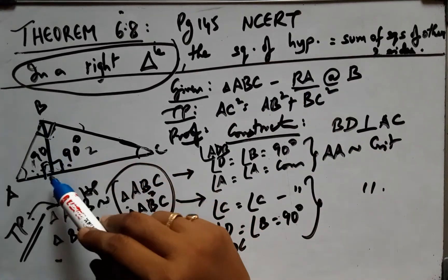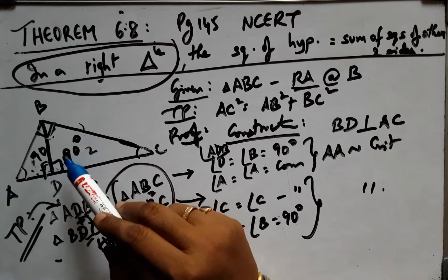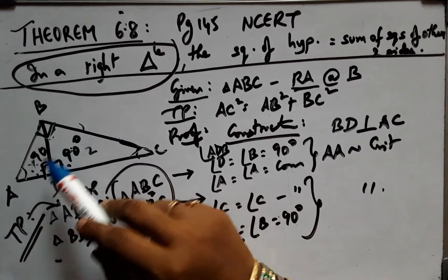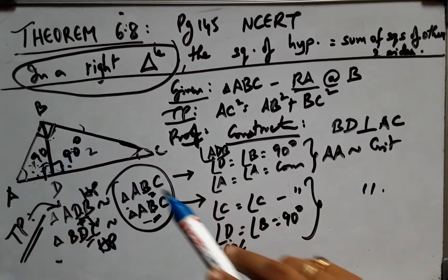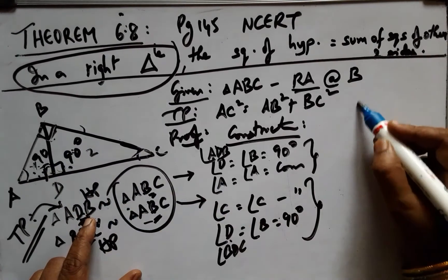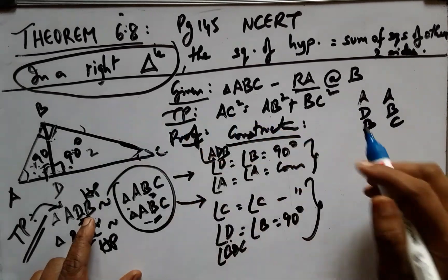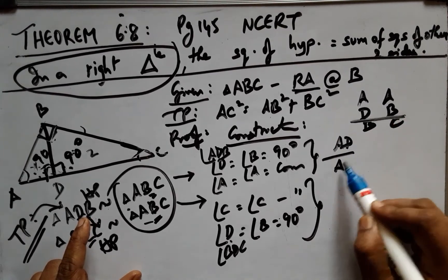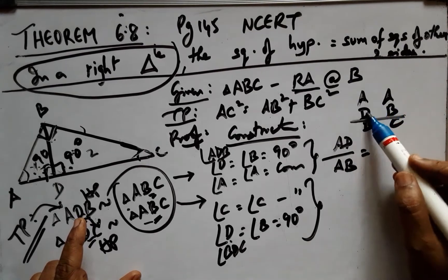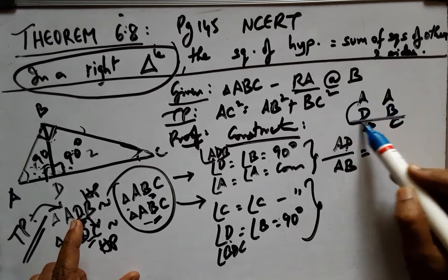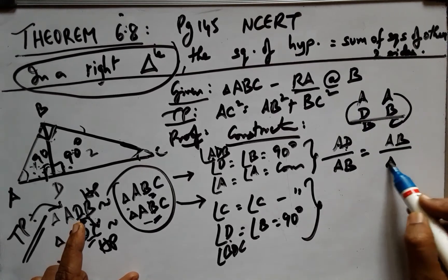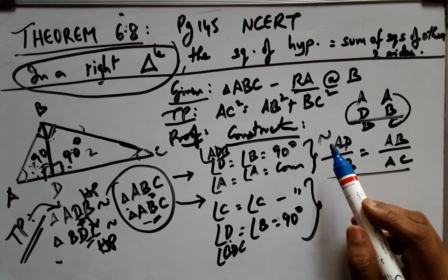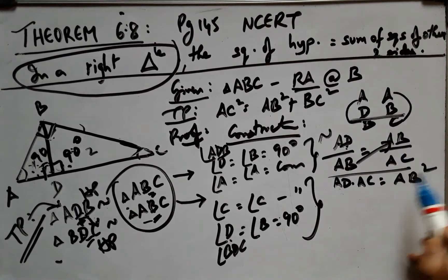If you drop the altitude, the two triangles are similar to the whole triangle as well as mutually similar to each other. Looking at the vertices and the ratio of sides: AD/AB = AB/AC. This proportion comes from similarity, giving us AB² = AC · AD.